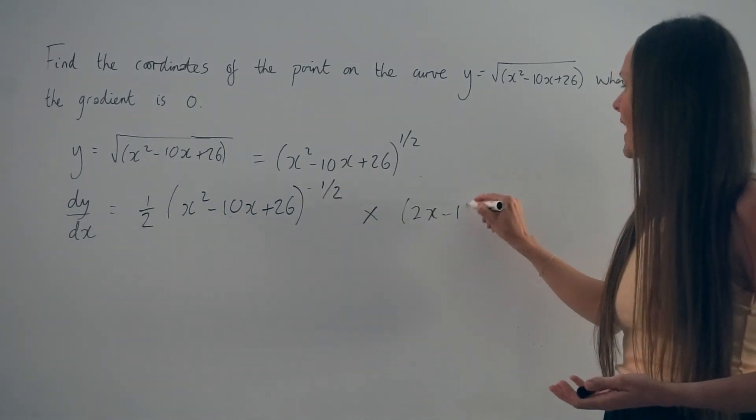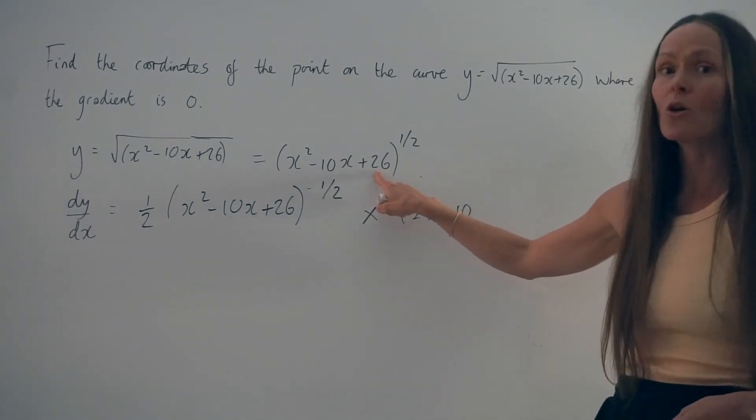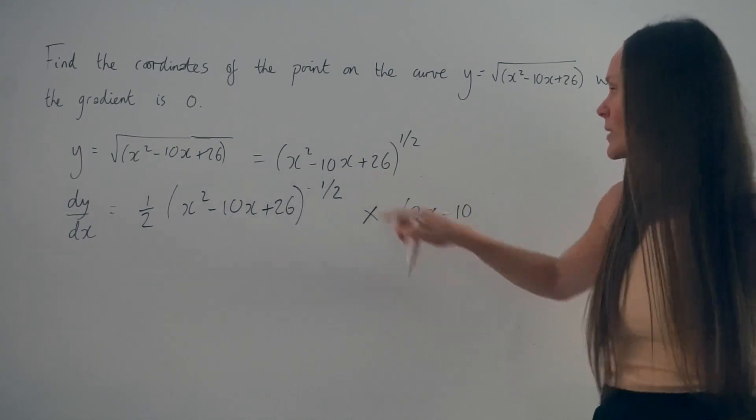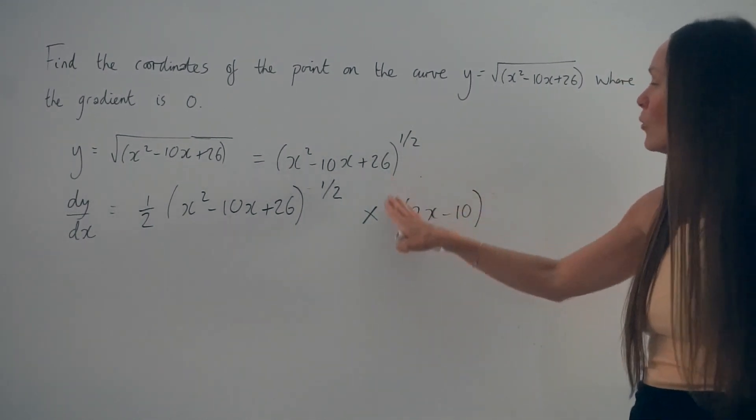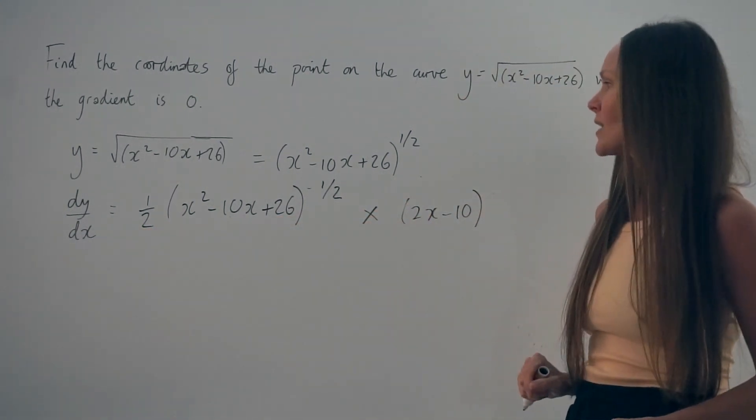Then if I differentiate negative 10x, I'm left with negative 10. And lastly here, if we differentiate the constant, we're left with 0. And make sure you write this answer in brackets because remember you're multiplying all of this with what's on the left-hand side.